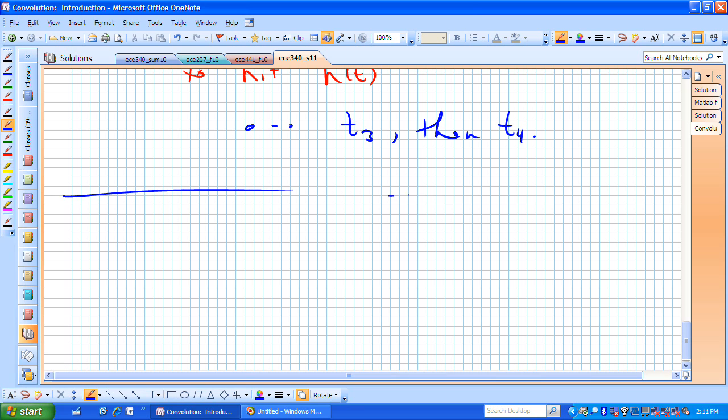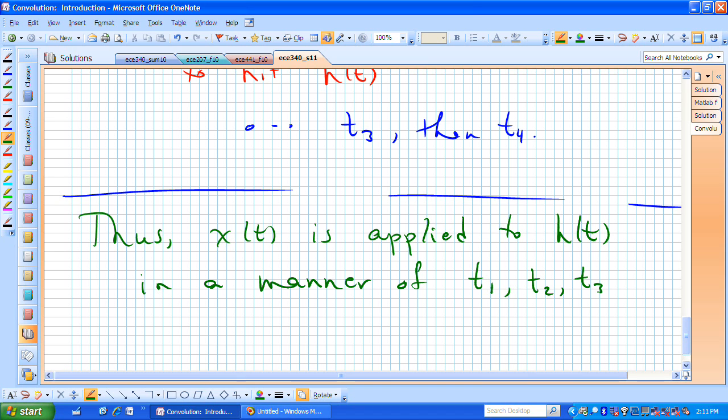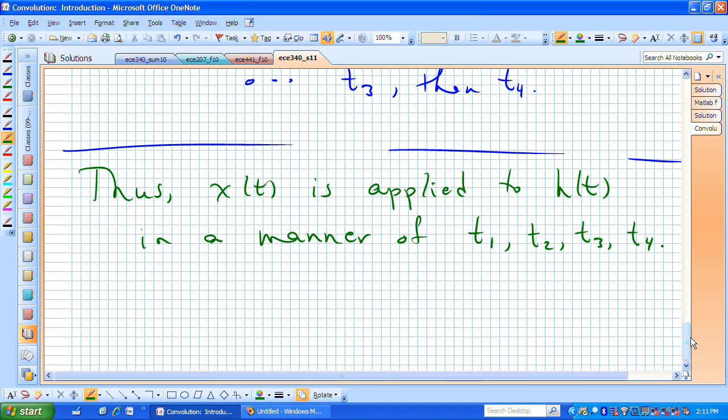If we think about that in terms of a picture, we can say, thus, x of t is applied to our system, which we're cataloging as h of t in a manner of first t1, then t2, then t3, and finally t4. Those points, or transition points on x of t, are applied in that time sequence to the system h of t.